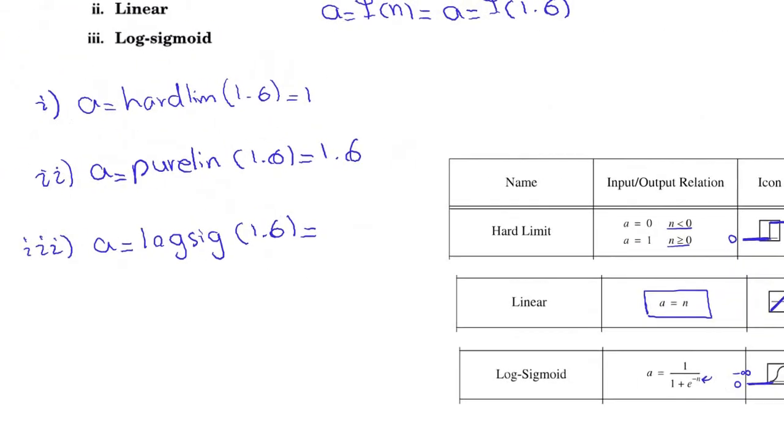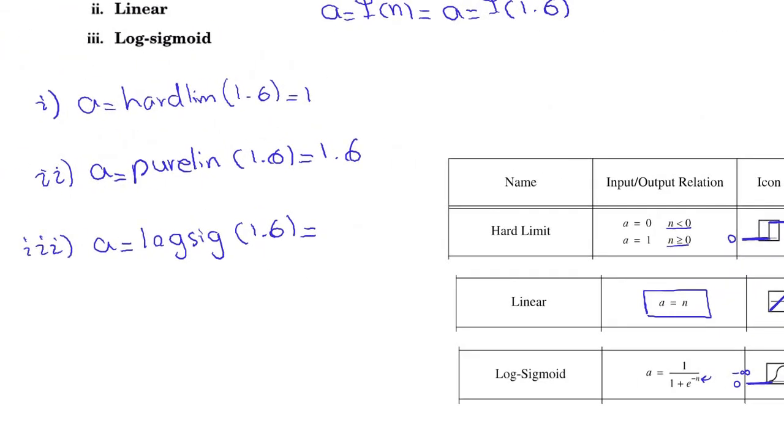So this is 1 over 1 plus e to the power of 1.6 equals. This final value is 0.8320.